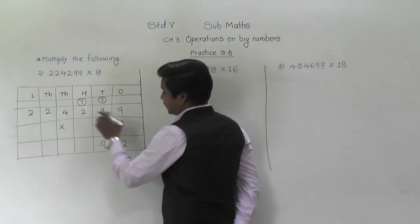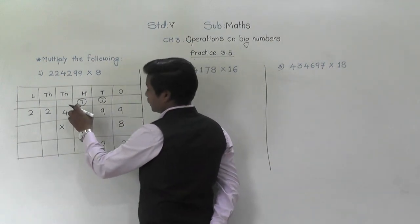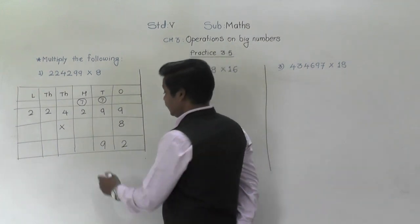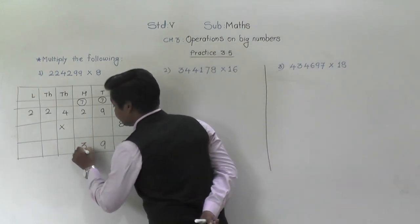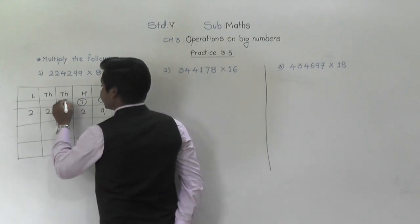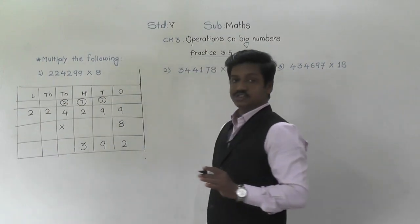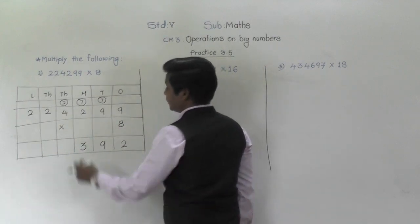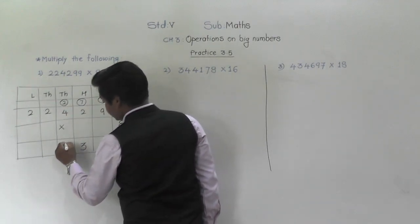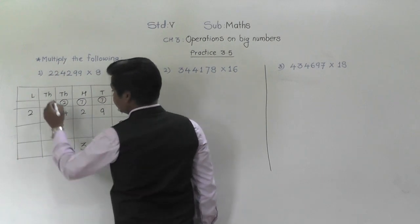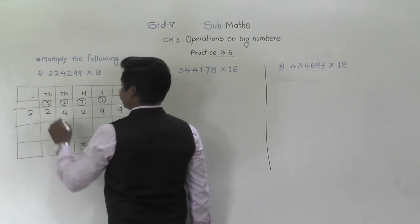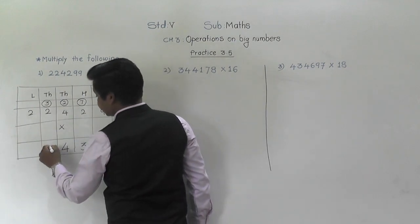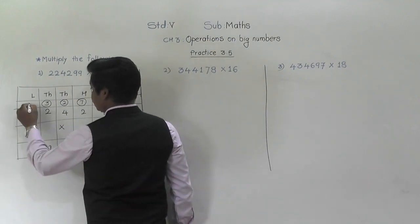Then 8 twos are 16. 16 plus 7 is 23. So 3 will come down, 2 will be carried. 8 fours are 32. 32 plus 2 is 34. So 4 will come down, 3 will be carried. 8 twos are 16. 16 plus 3 is 19. 9 will come down, 1 will be carried.